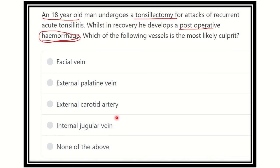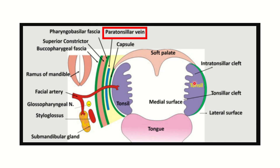Here we can see the palatine tonsil, along with its arterial supply and venous drainage. This is the capsule of the tonsil. The tonsillar branch arises from the facial artery, and the vein here is the paratonsillar vein. So the source of bleeding would be either the facial artery or the paratonsillar vein.